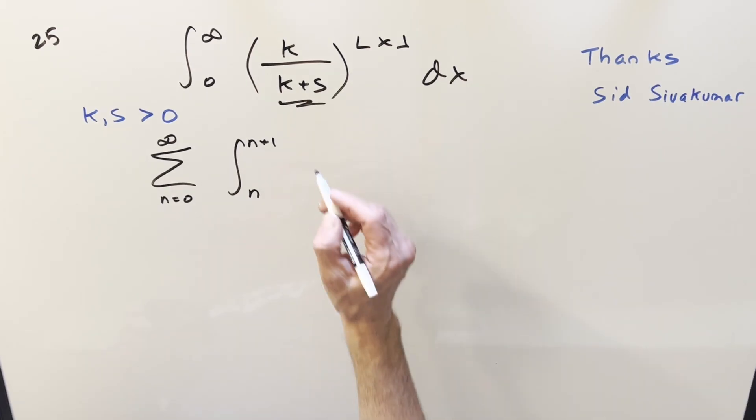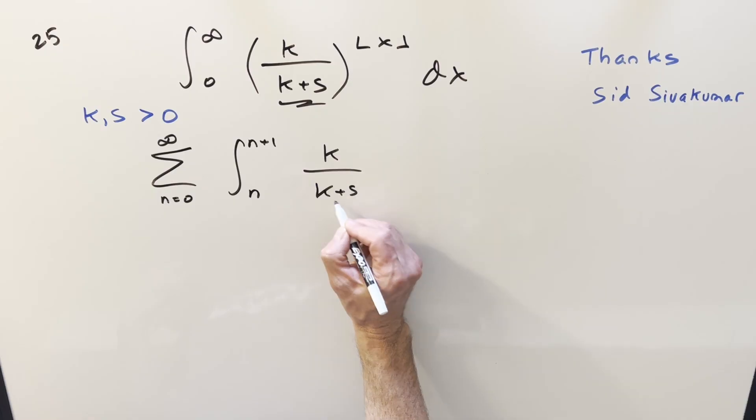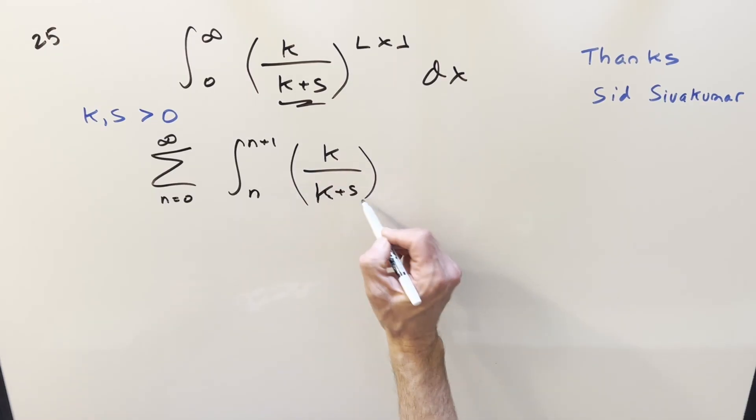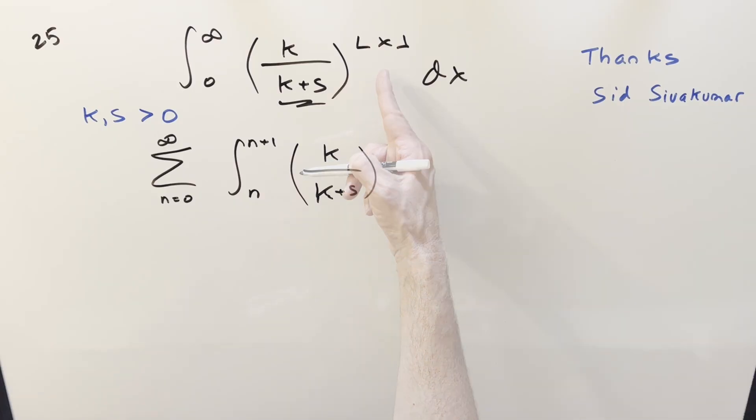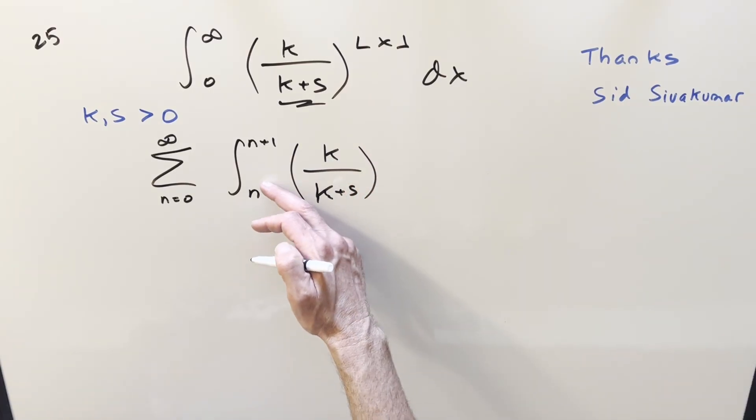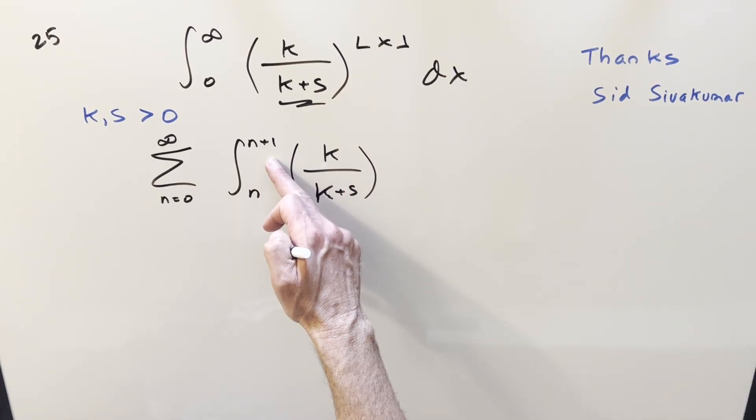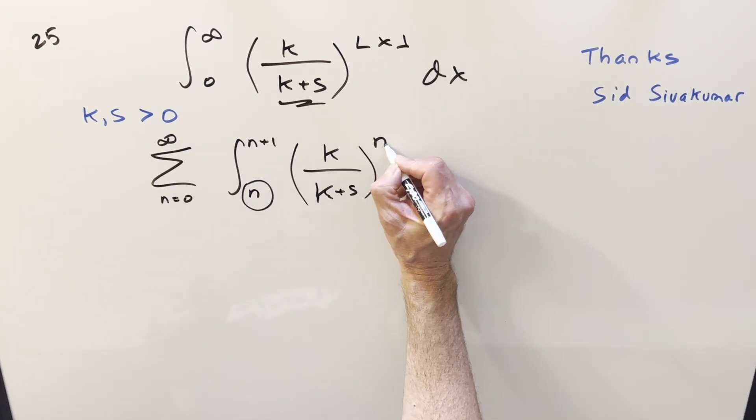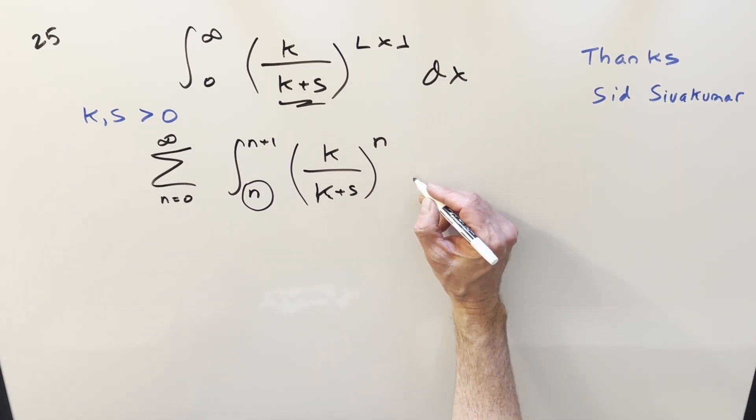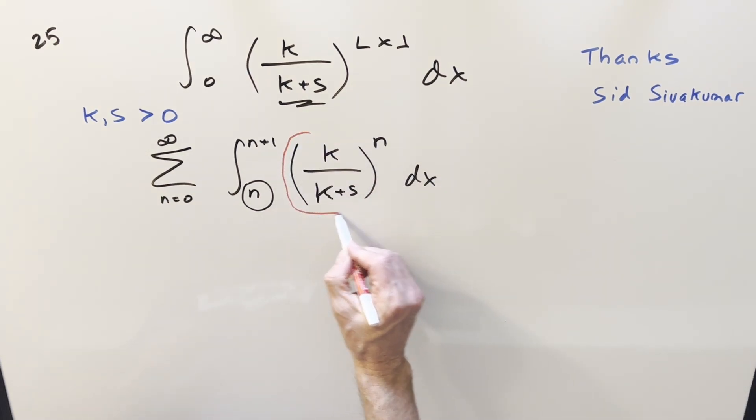And then this whole thing is just going to be a constant, but we'll leave it in this form. So we have k over k plus s. But now what's going to happen with the floor function here is this is going to become a constant too. So when n is an integer, all of our x values here are going to be between n and n plus 1. The floor is going to round down to the lower value, which is just this lower bound. So this is going to turn into just n in the exponent dx. But now everything here is just a constant. We have no x, so this whole thing can come out front of the integral. And now we're just integrating 1.